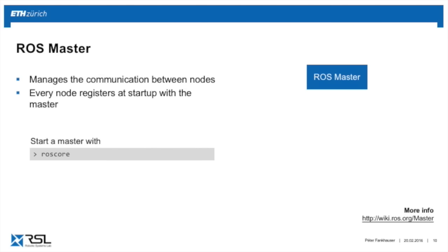One important element is the ROS master, which manages communication between your nodes. At startup, when a node comes up, it registers with the master, which makes sure all nodes can communicate with each other. You can start a ROS master in a console by simply typing roscore. ROS core has multiple elements, one of which is the ROS master.